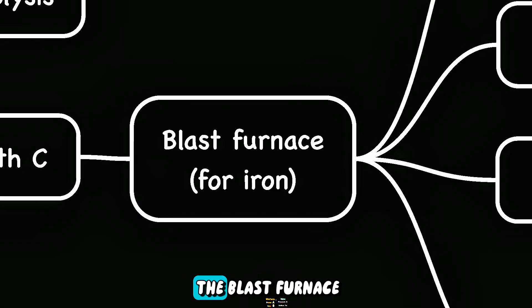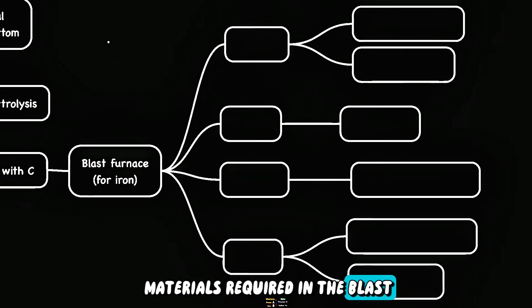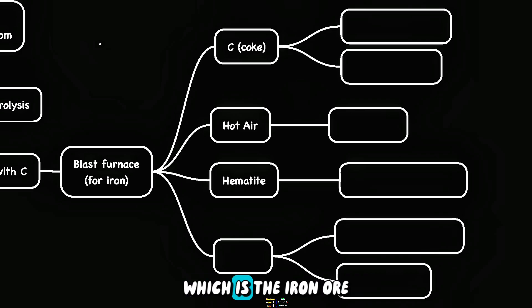Iron is extracted in the blast furnace. There are four main materials required in the blast furnace. First, it is carbon, which is commonly known as coke. Second is hot air, hematite, which is the iron ore, and last is limestone or calcium carbonate.